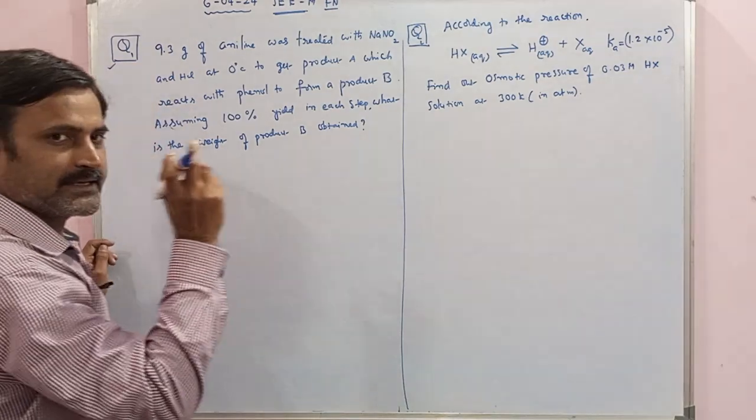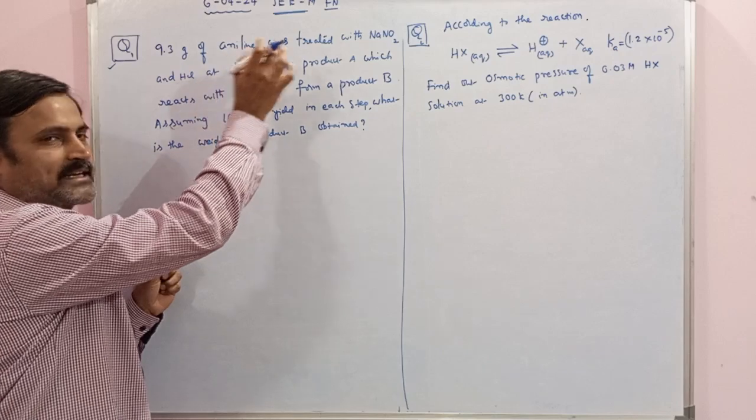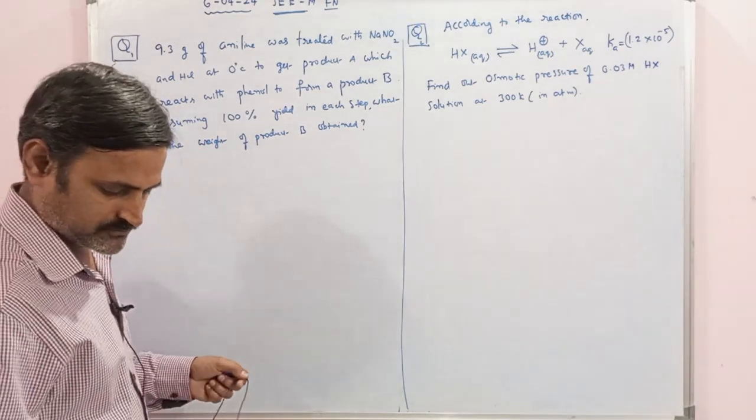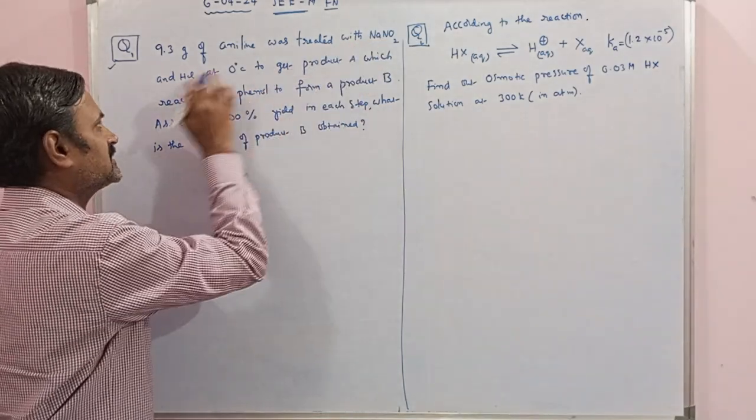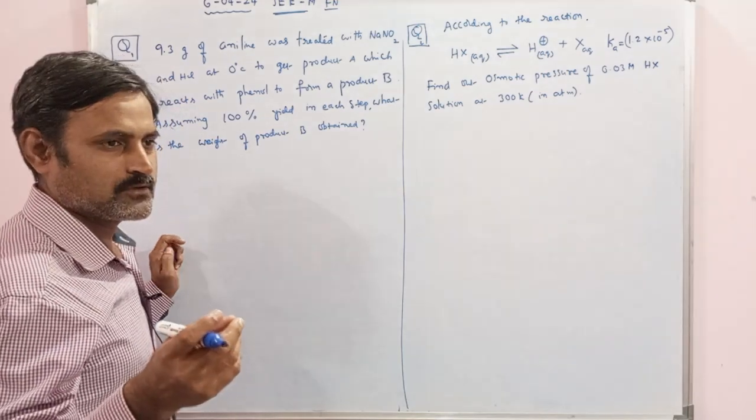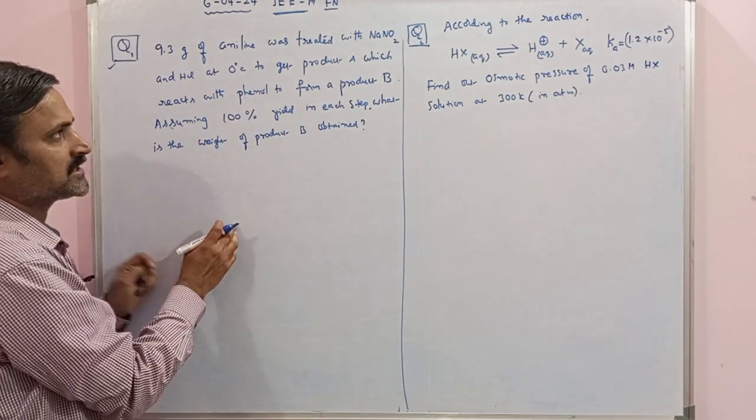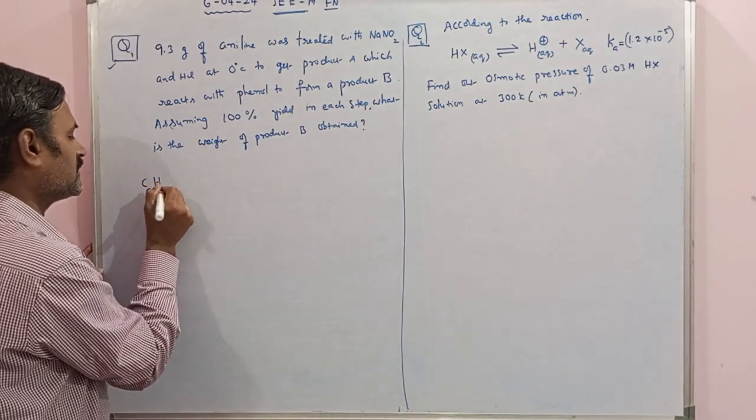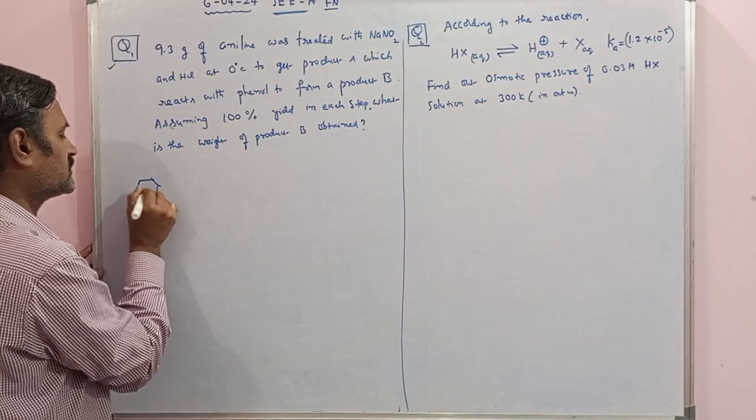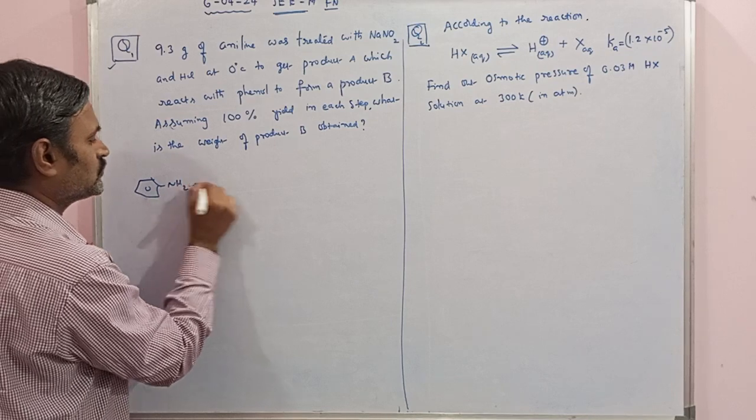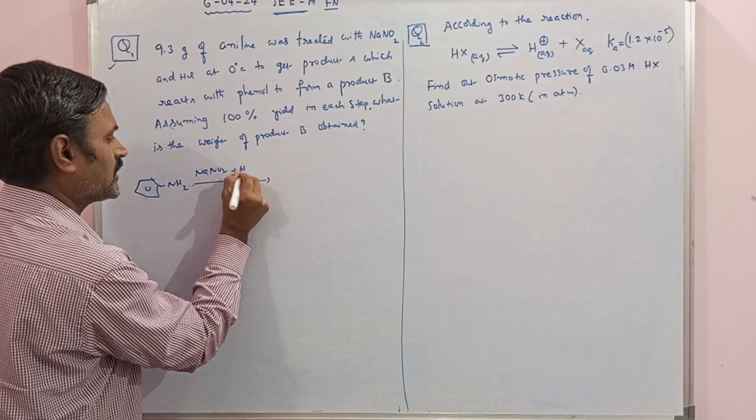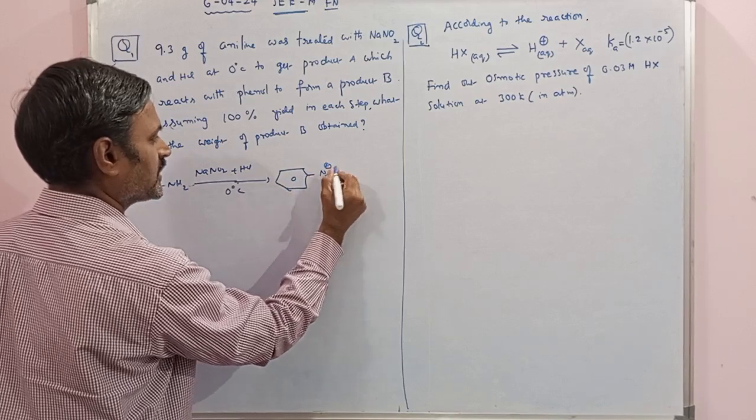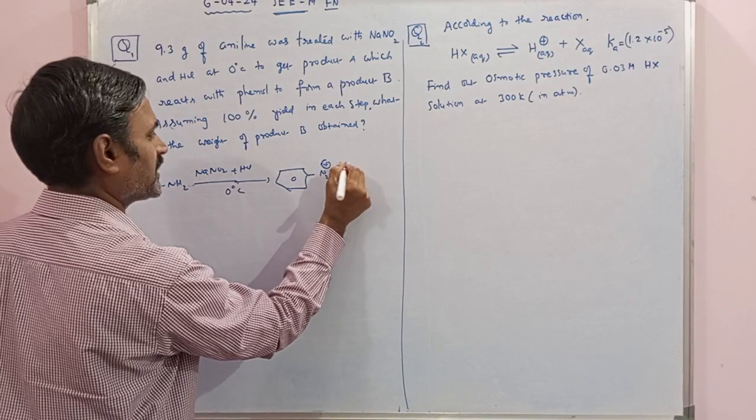The first question is an inline question. In this, they are telling aniline is treated with sodium nitrite and HCl. 9.3 grams given. In previous sessions we saw that aniline when it reacts with nitrous acid and HCl, which is the most important organic reaction, formation of diazonium salt, that is the first step of the reaction.